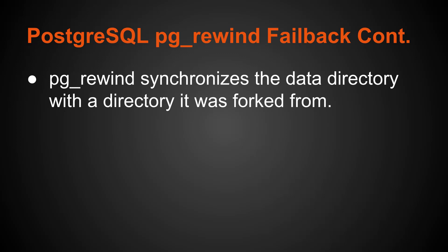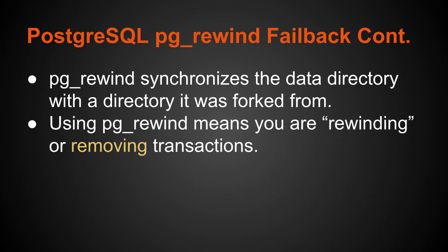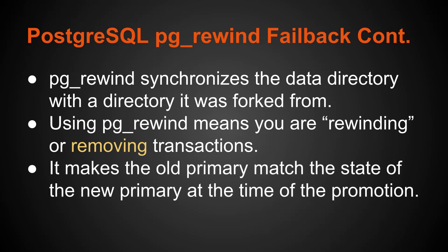PG Rewind is a utility that synchronizes the data directory with the directory it was forked from. Essentially PG Rewind means you're rewinding or removing transactions, so be sure to keep this in mind. The scenario is: you have a primary database and a replica, that replica gets promoted, but on that old primary if there are any transactions and you want to set it up as a new replica, you essentially have to rewind or remove those transactions. You're erasing data if you're using this tool, so be sure you're aware of that before you decide to use PG Rewind. It makes that old primary match the state of the new primary at the time of promotion, so any writes that happened since that promotion event on the old primary will be lost.